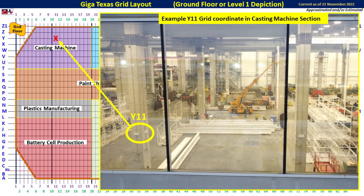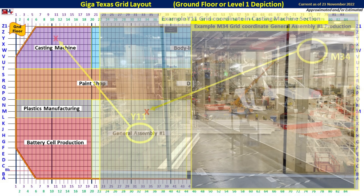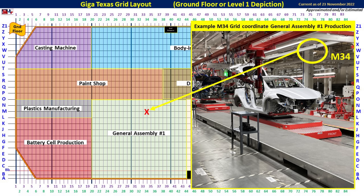This image is a great look into the casting machine structure about midway towards the east side. You can see that they are assembling some bridge crane rails getting ready for the IDRA 9,000-ton gigapress. The column is listed as Y-11, and you can see on the grid map where this is located. Another image from Cyber Rodeo in the General Assembly production line shows column M-34, and on the grid map you can see exactly where this is located.